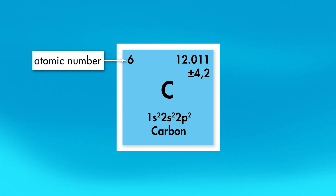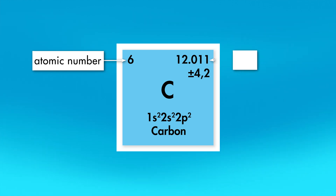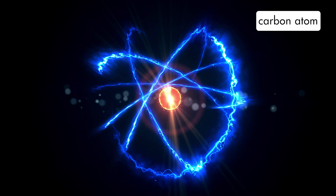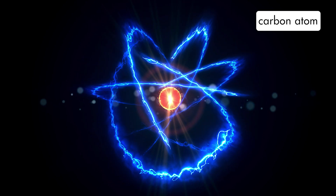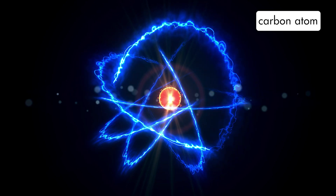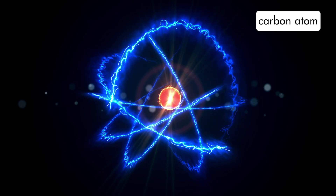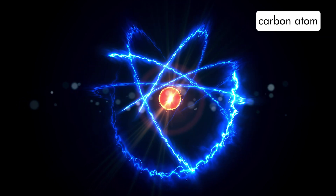Its relative atomic mass is 12.011, which means that one mole of carbon has a mass of 12.011 grams. Elemental carbon is any substance formed of only carbon atoms, with no other atoms mixed in. Elemental carbon exists in several naturally occurring forms.